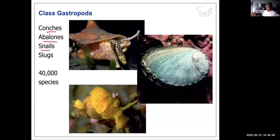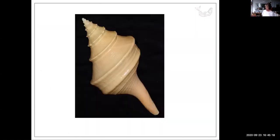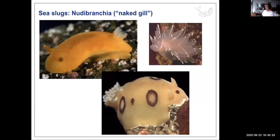Mollusca have complex organ systems: muscular, digestive, circulatory, nervous, excretory, respiratory, and reproductive. There are seven classes. We'll focus on Gastropoda — slugs and snails, about 40,000 species — Bivalvia, and Cephalopoda. One of the largest gastropods is the trumpet conch Syrinx aruanus, weighing 40 pounds.